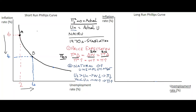Our traditional Phillips curve shows a trade-off between unemployment and inflation, whereas our modern one tends to show no relationship whatsoever between them. We'll start off on our graph where expected inflation equals zero, equal to actual inflation, placing point A at zero percent inflation and four percent unemployment — and we'll say that four percent actual unemployment equals the natural rate.